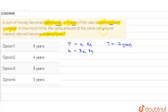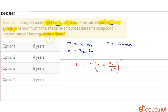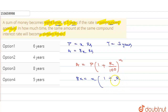Now, since interest is compounded annually, in the compound interest formula, the amount equals principal into (1 + rate of interest / 100) to the power n, where n is the time period. So here our amount is 8x, principal is x, into (1 + r/100) to the power 3.